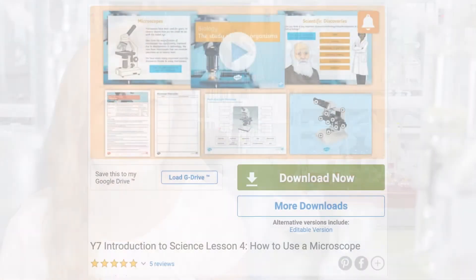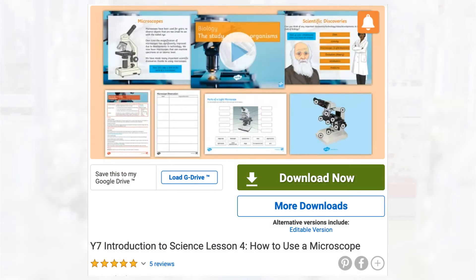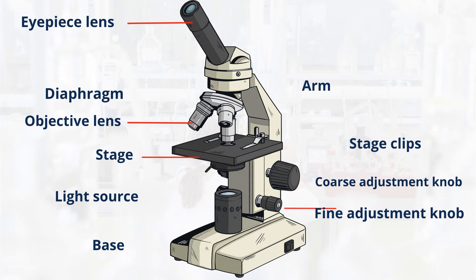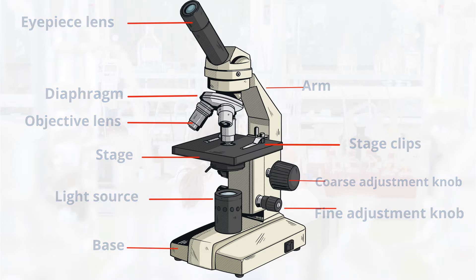Now let's take a look at the individual parts of a microscope. If you want to do this as a challenge, you can click on our lesson link below and download the activity sheet. So we have the eyepiece lens, objective lens, stage, fine adjustment knob, base, arm, stage clips, coarse adjustment knob, diaphragm, and light source.